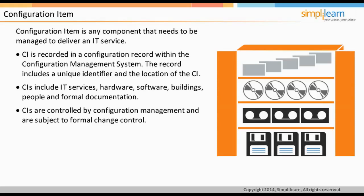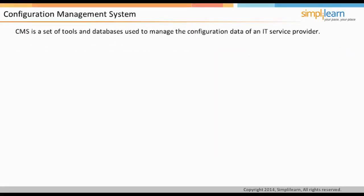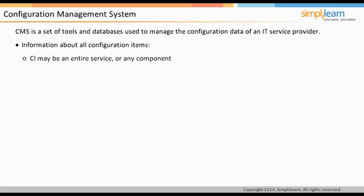The configuration management system is a set of tools and databases that are used to manage configuration data of an IT service provider. The CMS stores information about all configuration items. A CI may be an entire service or any component stored in one or more configuration management databases. The CMS includes information about incidents, problems, known errors, changes, and releases.